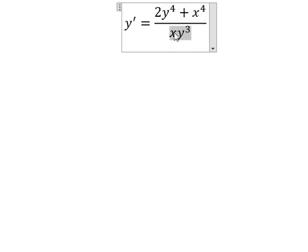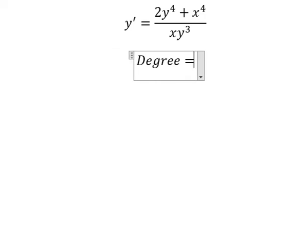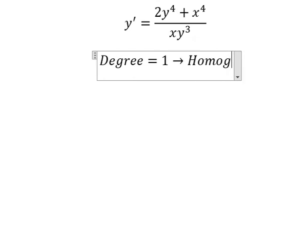...the y to the power of 3 multiplied by x represents about number one. So one plus three we have number four, and this one divided by this one gives us degree one. Four divided by four we have number one, and that is homogeneous.